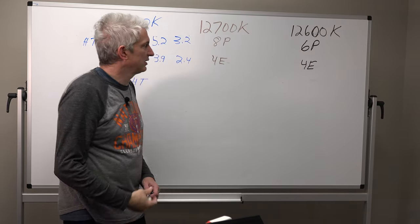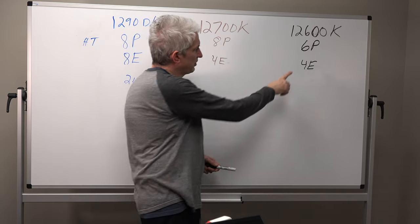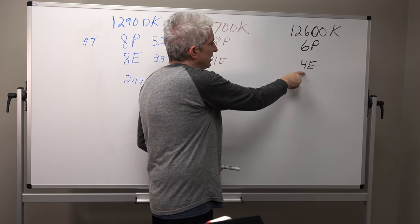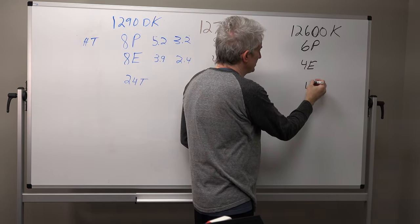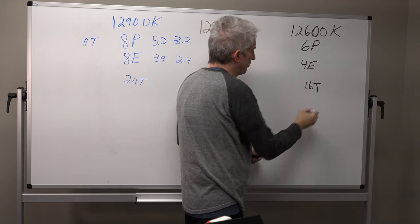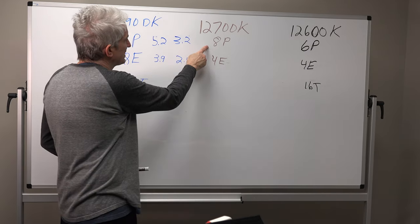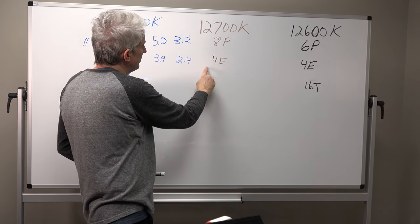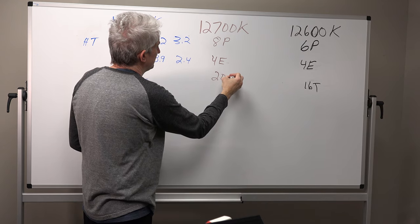And one thing we didn't do is we didn't count up the threads here. Remember performance cores have hyper-threading, efficiency cores don't. So we have 12 plus four, we have 16 total threads on this processor. And on the i7, 16 threads plus four gives us 20 threads.